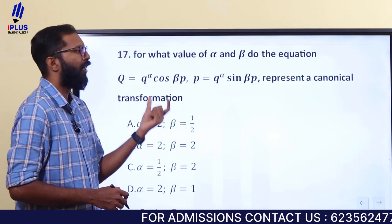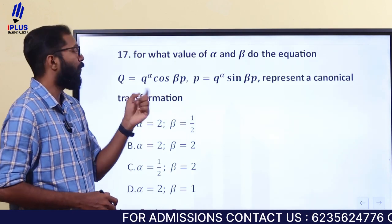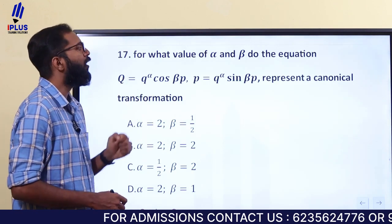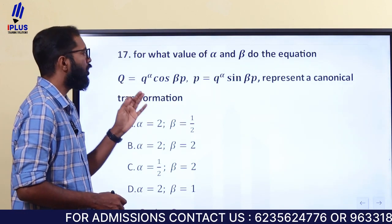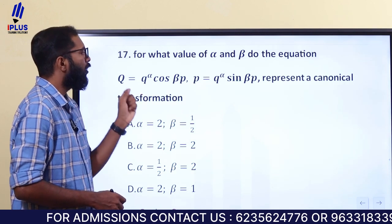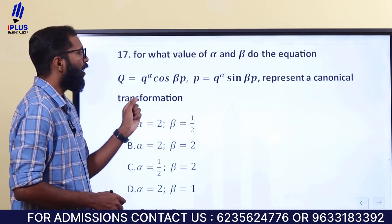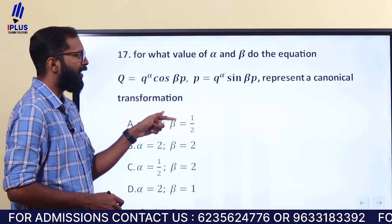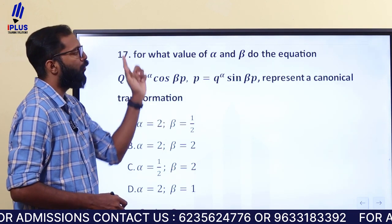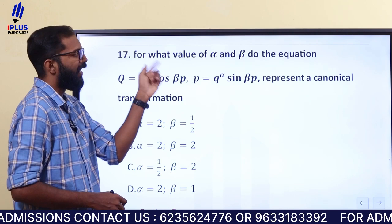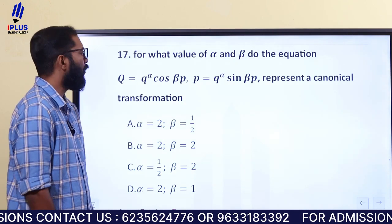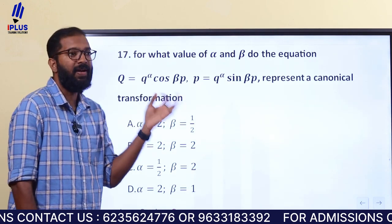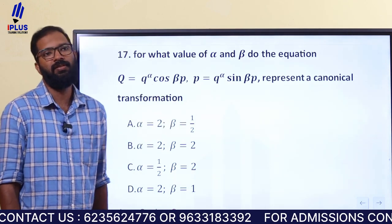For what value of alpha and beta do the equations Q equals q raised to alpha times cos(beta p), P equals q raised to alpha times sin(beta p) represent a canonical transformation?